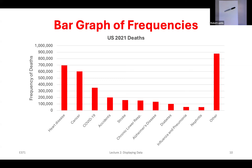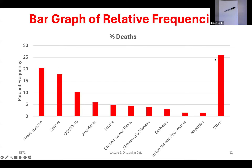Sometimes you want to show the frequency to convey magnitude — like 700,000 people dying from heart disease. Other times, you want proportions. We can also do a bar graph of percent frequencies: same categories on the X-axis, but now the Y-axis shows percent frequency. We're still only working with qualitative variables here. We can do a similar thing for continuous variables, but it gets a little more complicated.